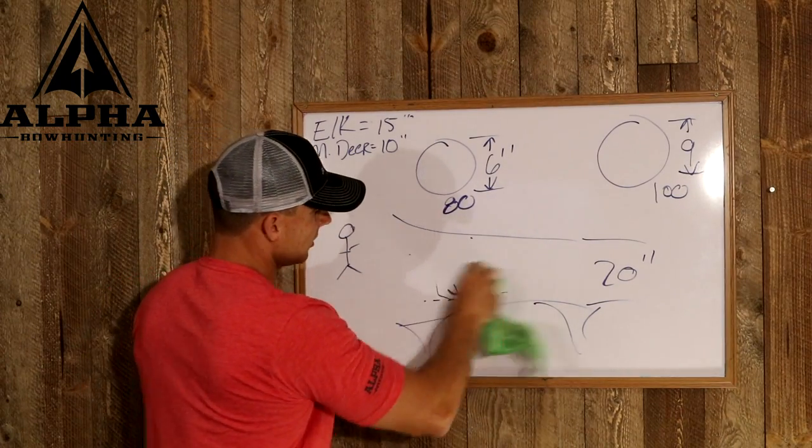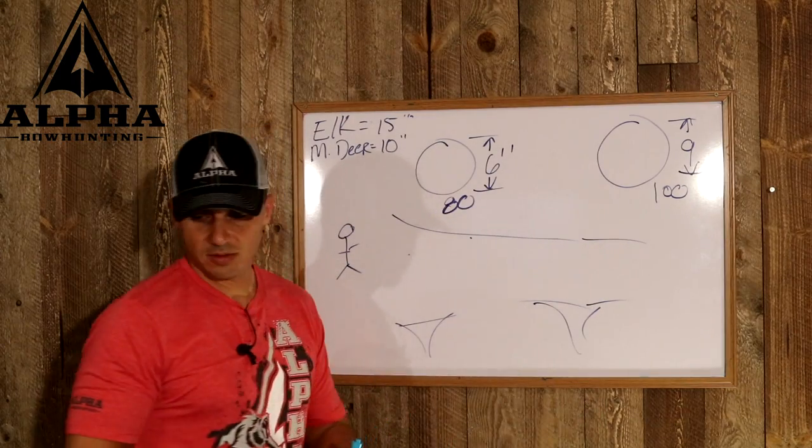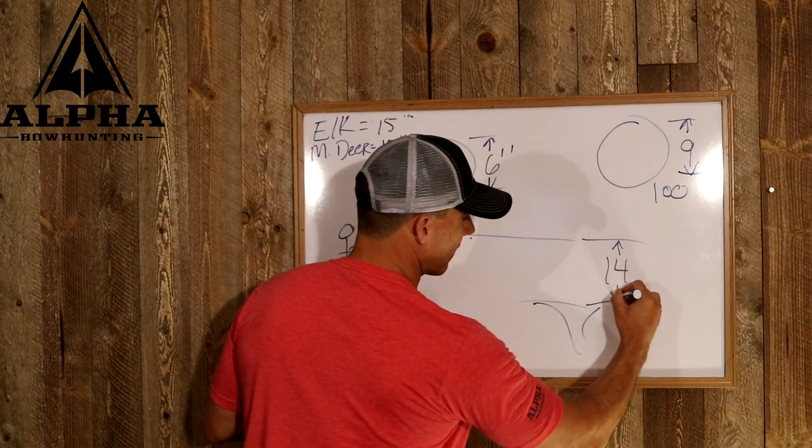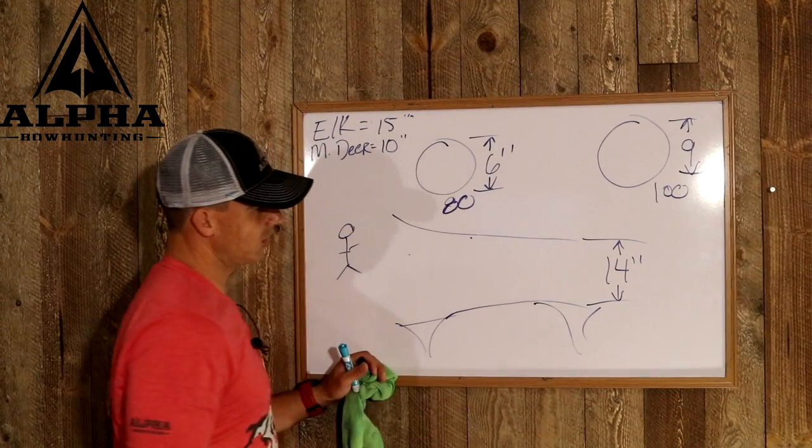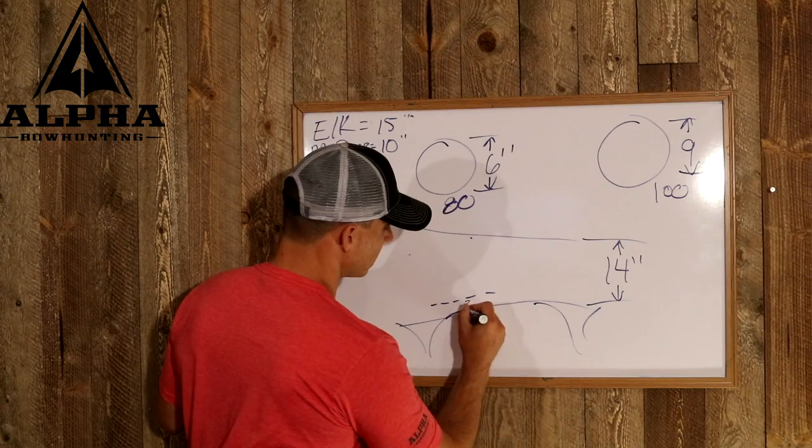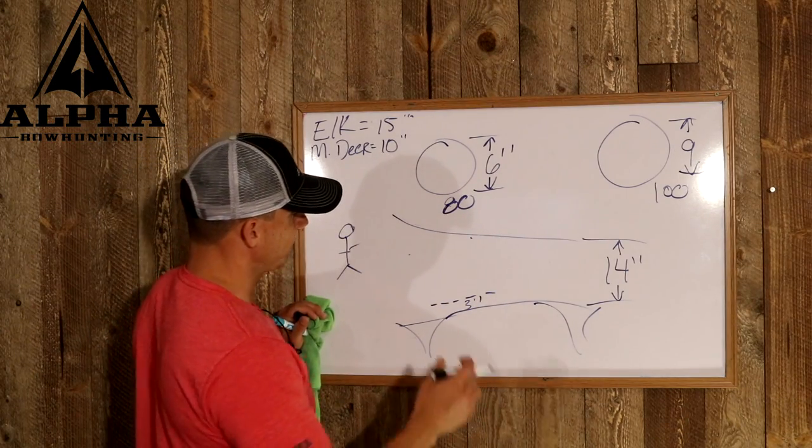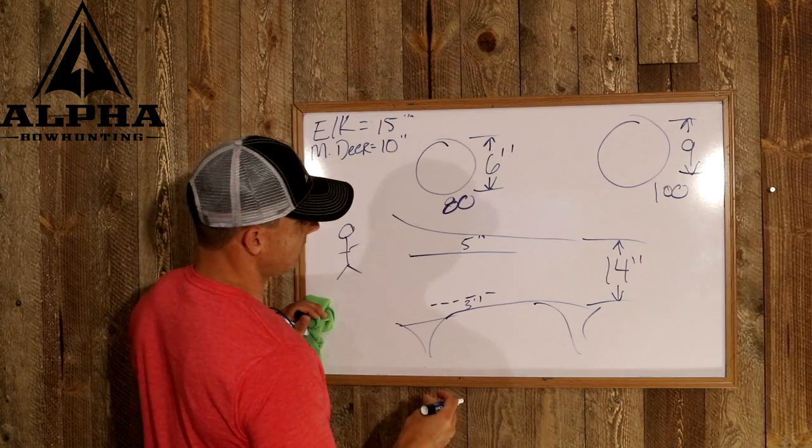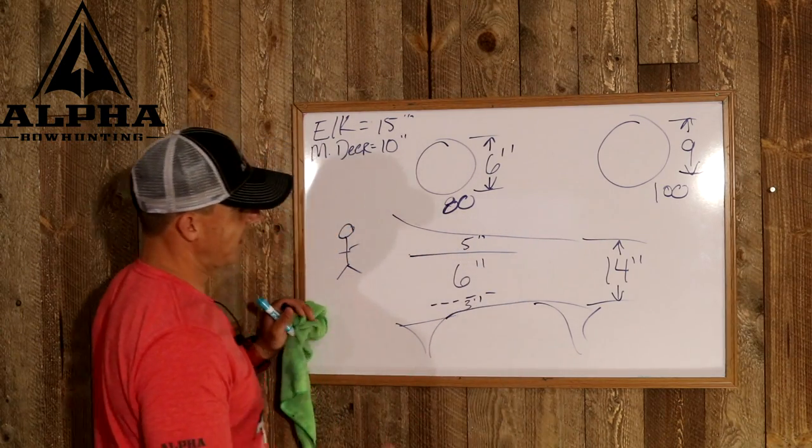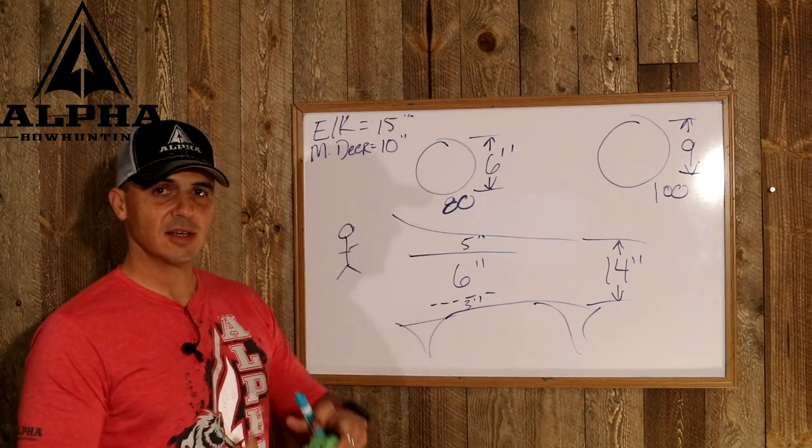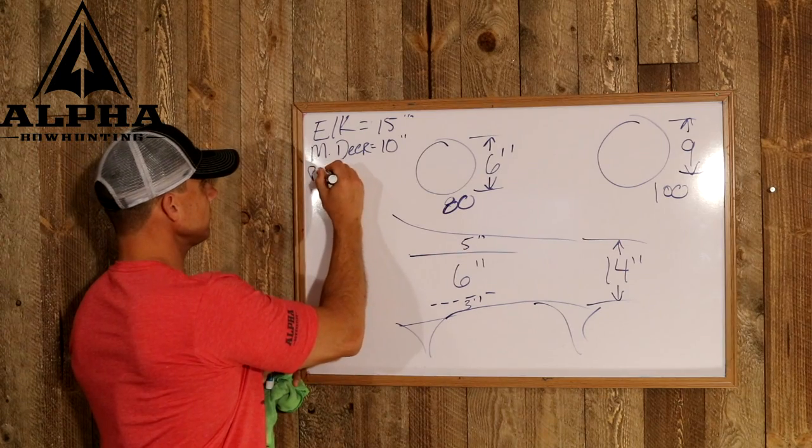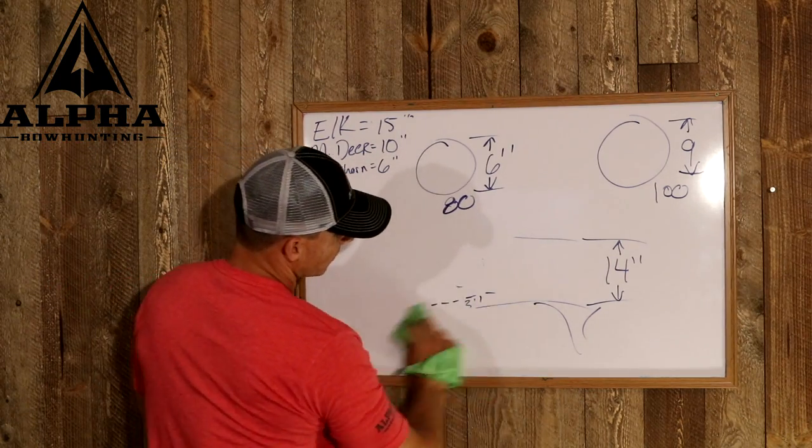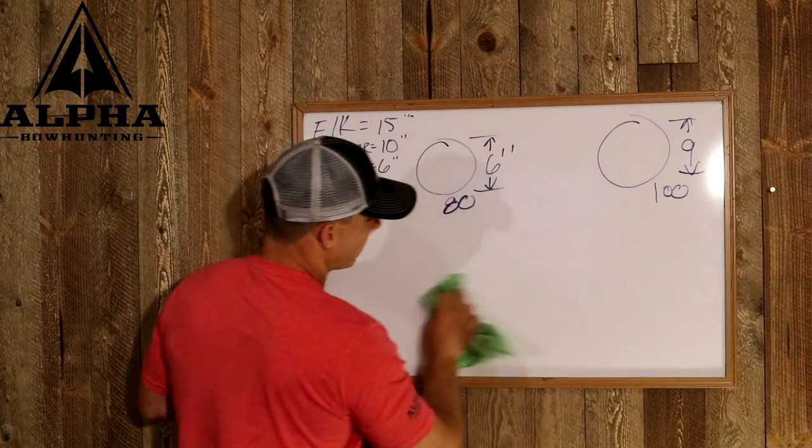Let's take it a step further and let's break it down into the smallest of the three that I'm going to be talking about, which is pronghorn. You've got roughly 14 inches of average top of the back to the belly line. In that situation, probably three inches is in our no shoot zone on the bottom. Maybe five inches is on the no shoot zone in the top. So we got roughly six inches, if my math serves me correctly, that our vitals is in that pronghorn.